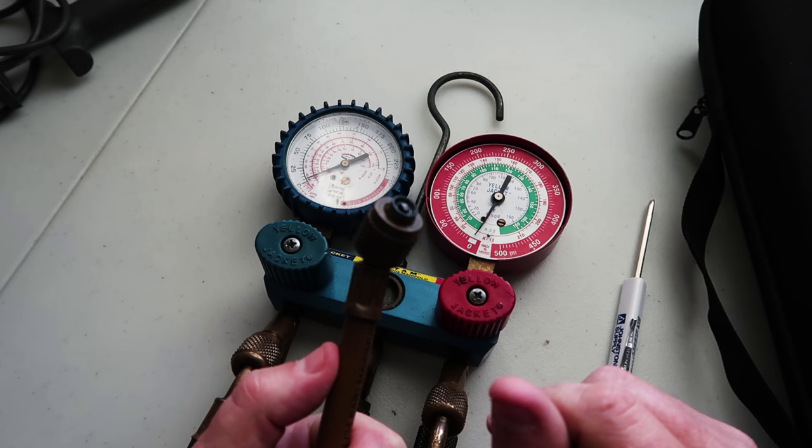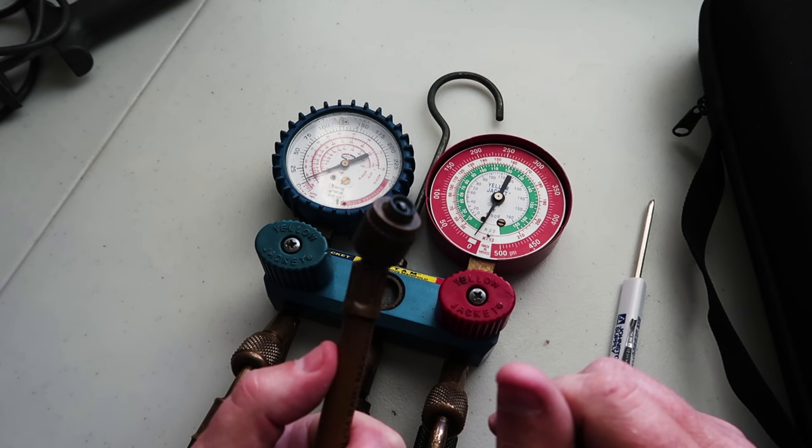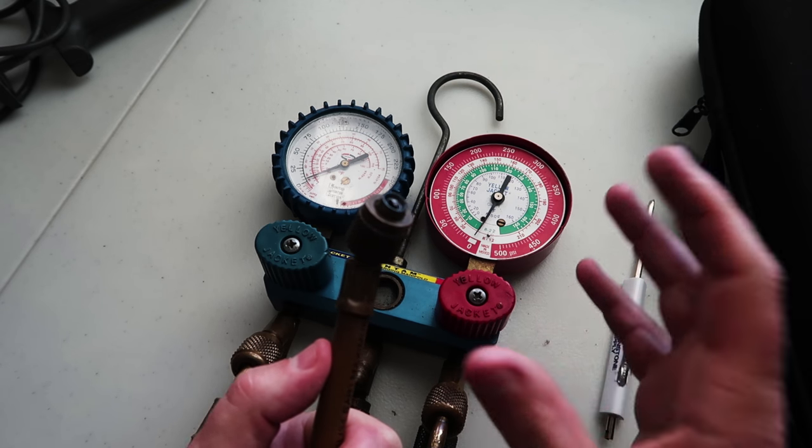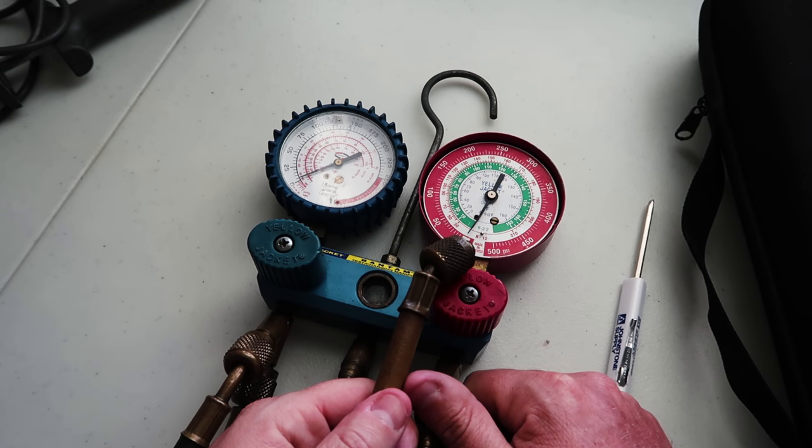So there you go. That's the basics for the analog refrigerant manifold. Stay tuned for future videos for us to talk about the differences between this and some of the more modern gauge manifolds. Thanks for watching.